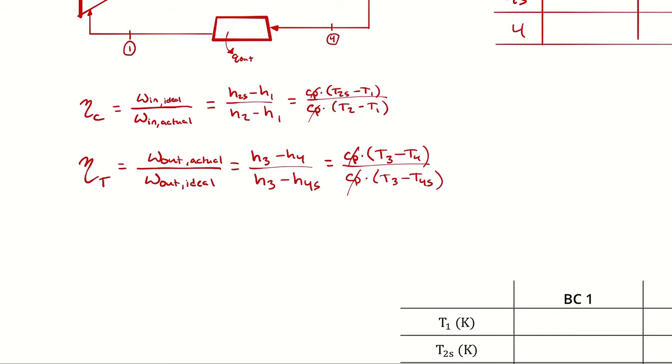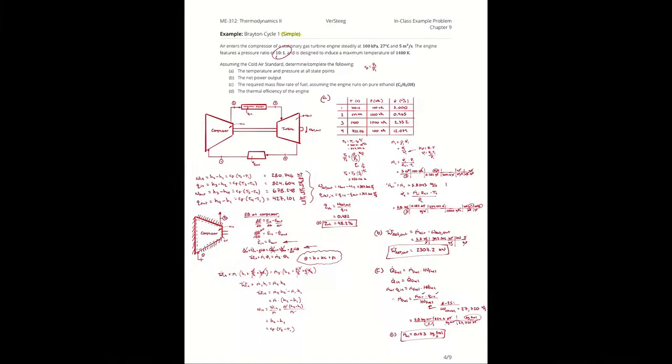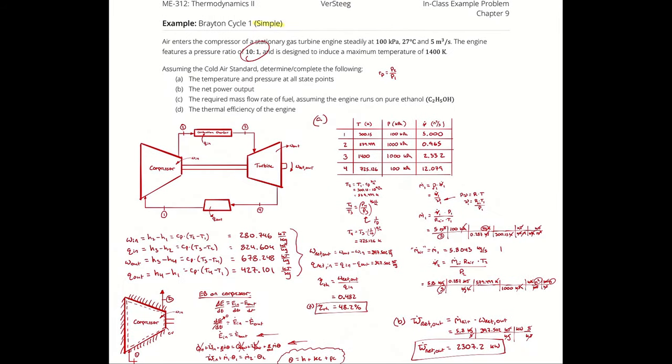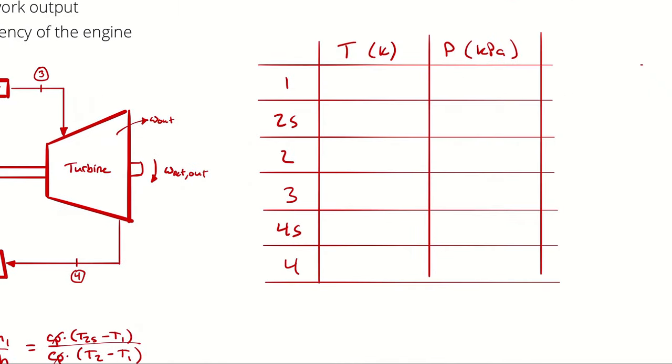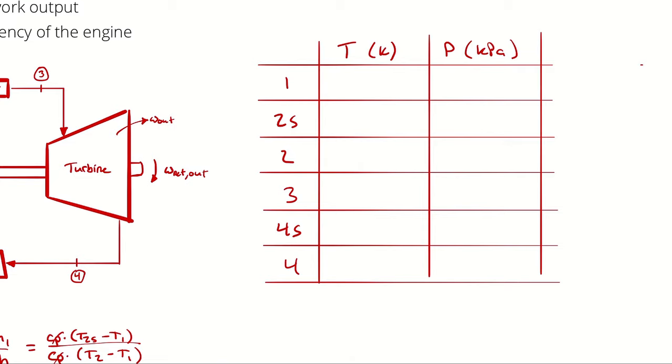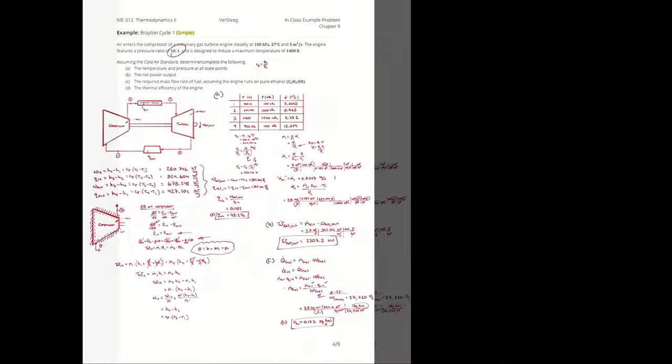So I can get to T2s in the same exact way I did in the previous problem, because remember that in this first iteration of the problem, we had an isentropic process across the compressor. Therefore, our T2 in this problem is T2s for the second problem. Similarly, T4 in this problem is T4s in the next iteration of the problem. And then to get from T2s to T2 actual, I use this equation, knowing T1, T2s, and ηC. And then to get from 4s to 4 actual, I use this equation, knowing T3, T4s, and ηT. So since I know all of the temperatures and pressures for 1, 2s, 3, and 4s already, I can populate those.